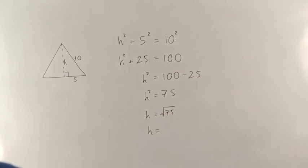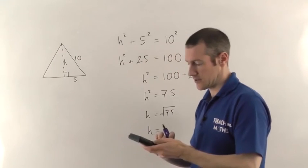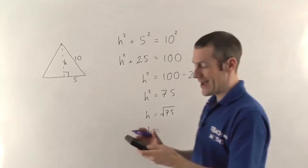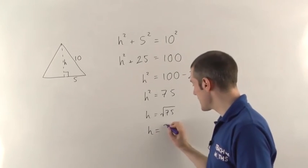So reading from my calculator, h is going to be 8.7 to one decimal place.